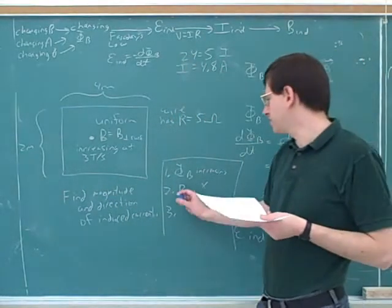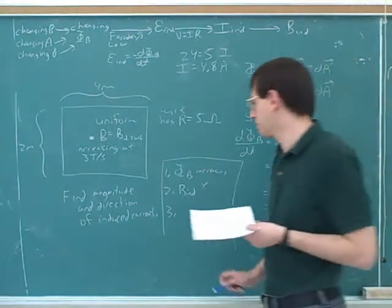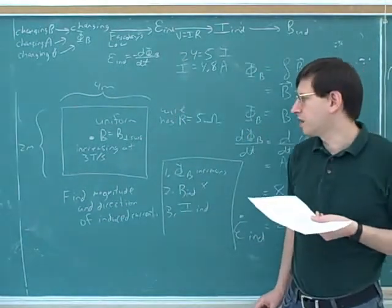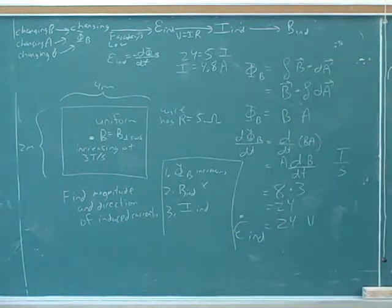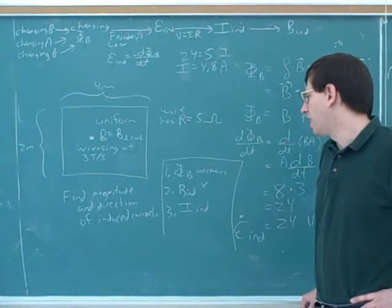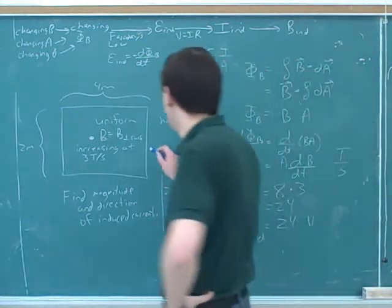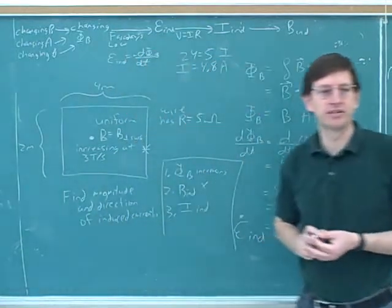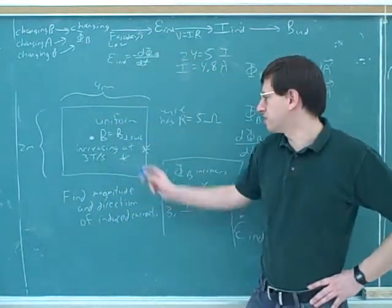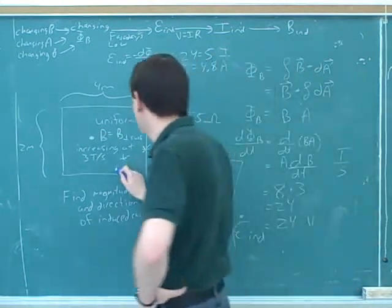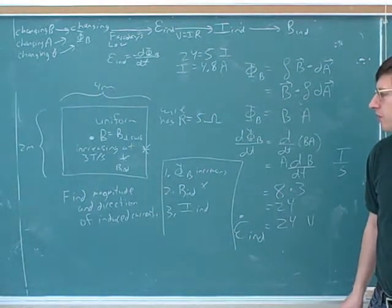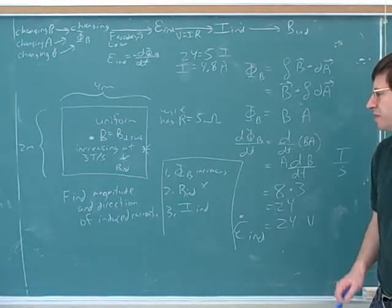If you know the direction of the induced field, you should be able to figure out the direction of the induced current using the right-hand rule. We've only worked with the right-hand rule for long straight wires, never for loops. The key thing is to focus our attention on one part of the wire — for example, this part here. The induced field will be on the inside of the loop, opposing the change in flux.